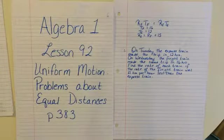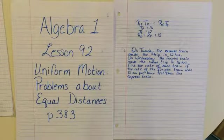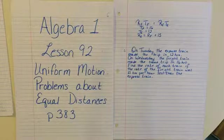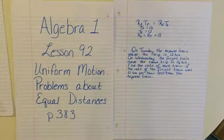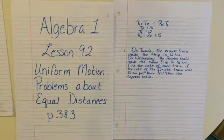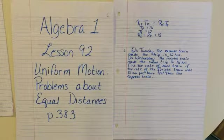Hi, this is Algebra 1, Lesson 92. We're going to talk about uniform motion problems about equal distances, starting on page 383.